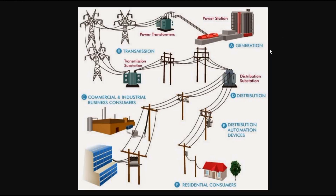Basically how it works is you have your power station — which could be nuclear, biomass, solar, wind turbine, tidal, or hydroelectric — and that steps the energy up to a transmission substation running very high voltages, into a distribution substation which downgrades the energy to smaller transformers, finally allowing that energy to be utilized by residential, commercial, or industrial purposes.